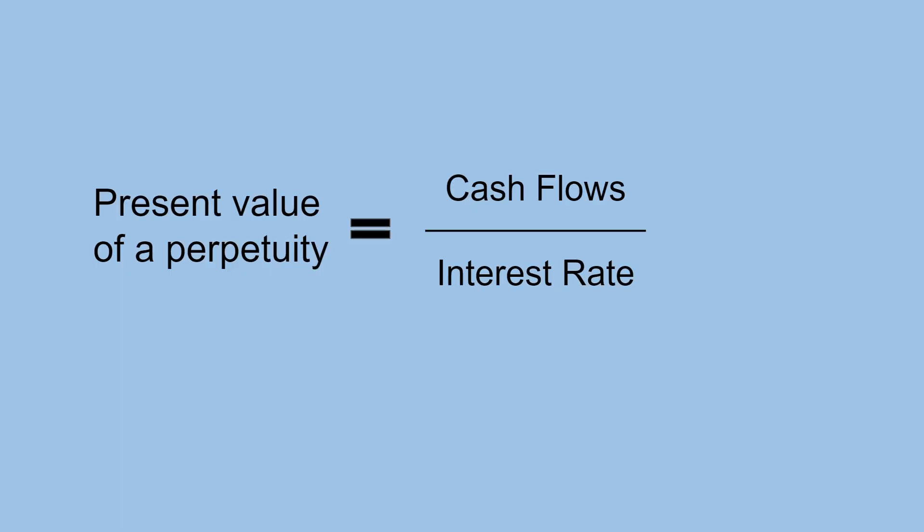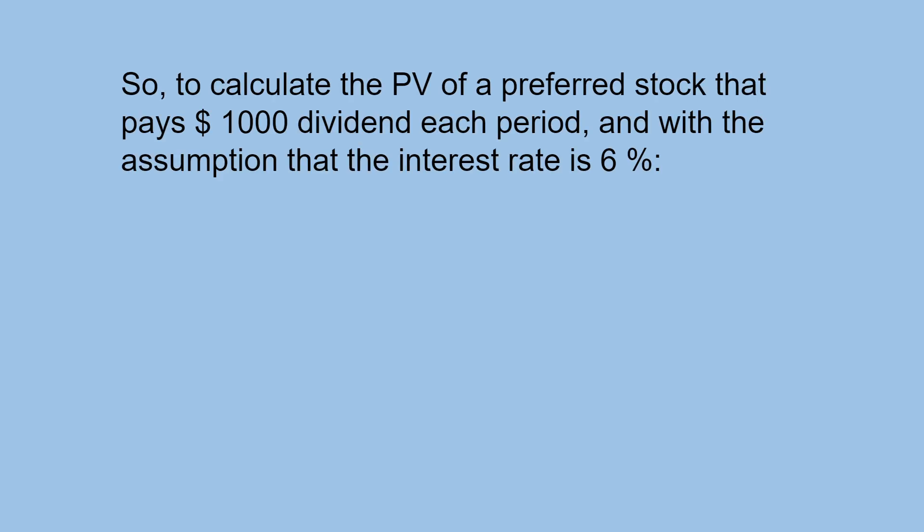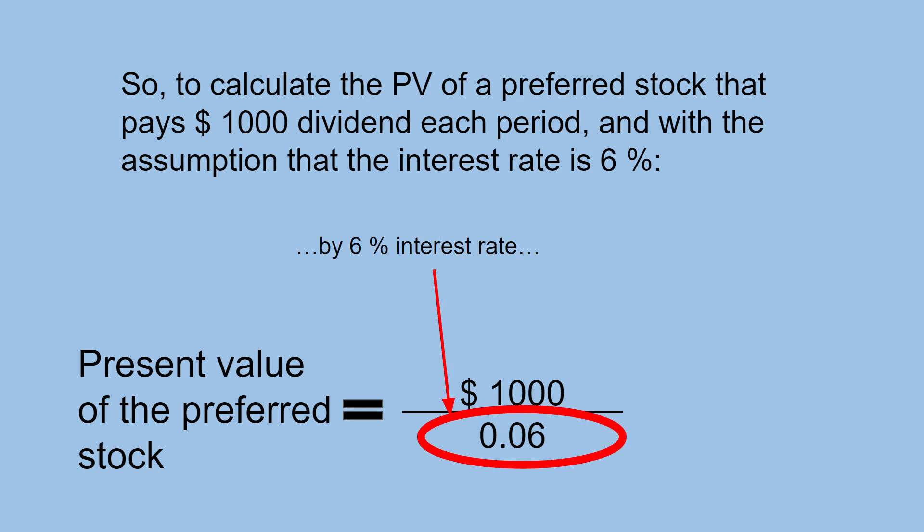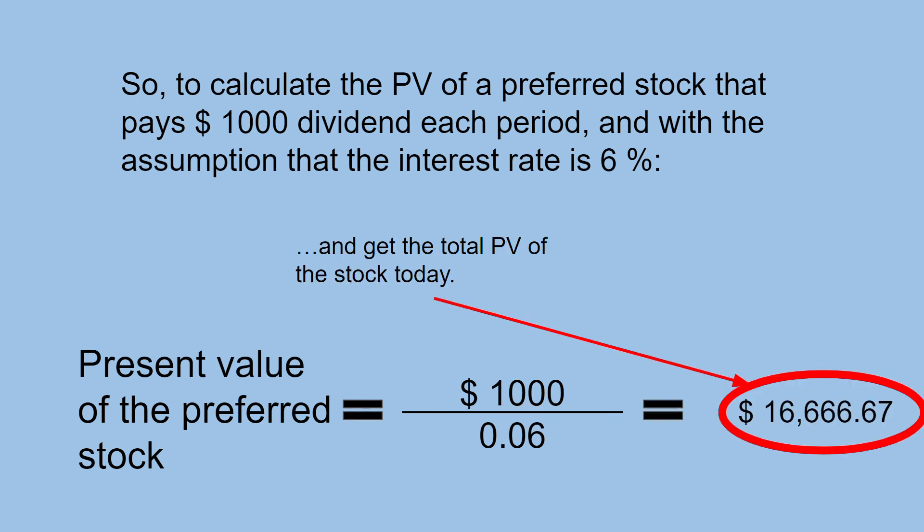The present value of a perpetuity equals cash flows divided by interest rate. So to calculate the present value of a preferred stock that pays $1,000 dividend each period, with the assumption that the interest rate is 6%, we divide $1,000 by 6% and we get the total present value of the stock today.